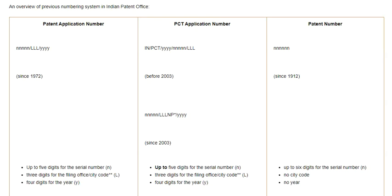Good morning friends. Today we are going to discuss the patent numbering system used in the Indian Patent Office. In India there are two numbers useful for identifying a patent application: the application number and the patent number.